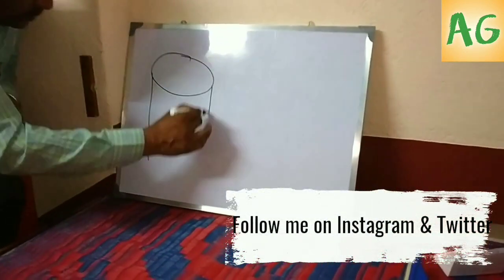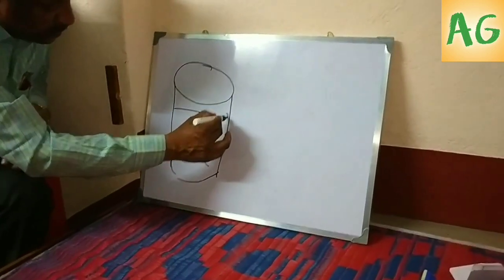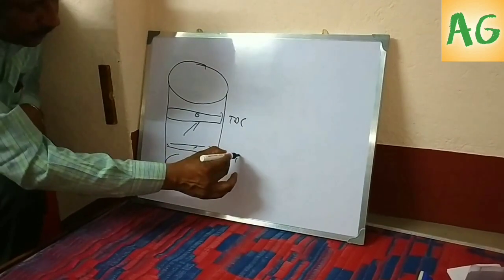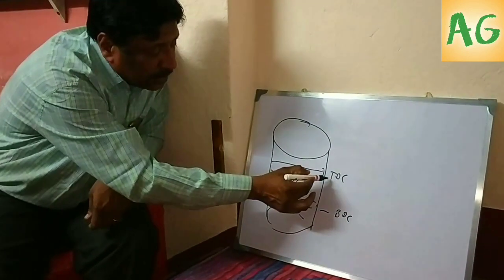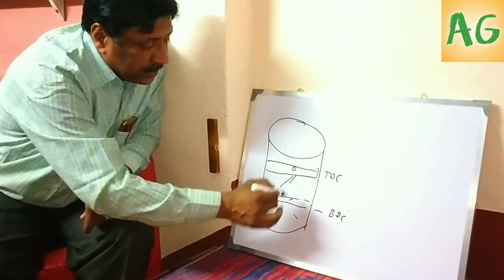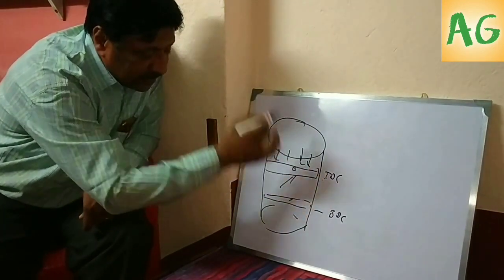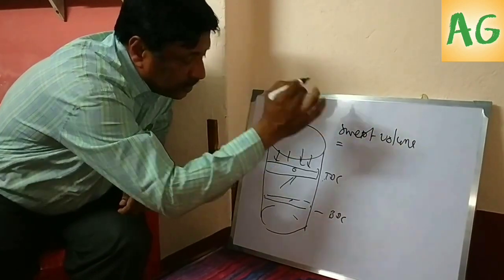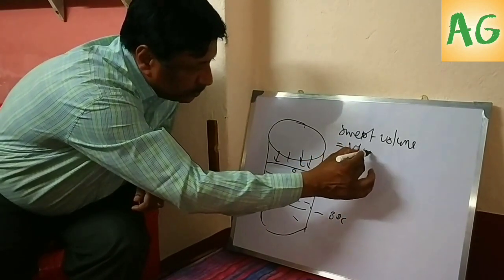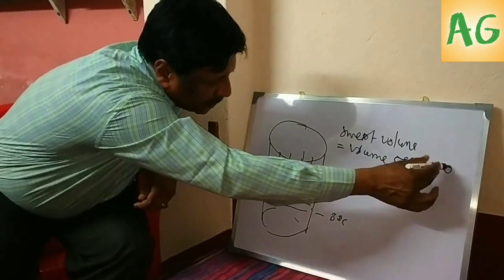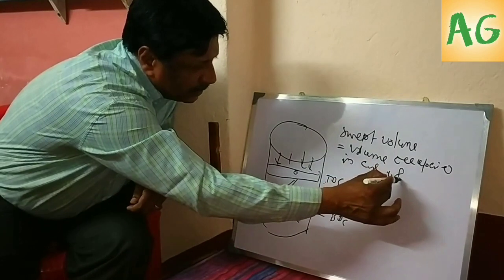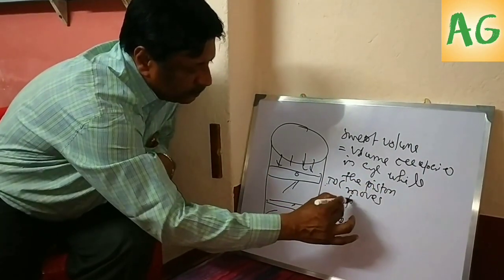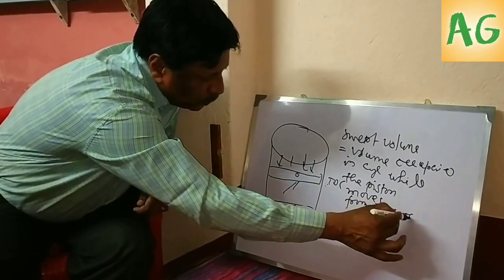We first draw a cylinder. The piston moves from TDC to BDC. While the piston moves from TDC to BDC, the air is drawn into the cylinder. Sweep volume means the volume occupied in the cylinder while the piston moves from TDC to BDC.